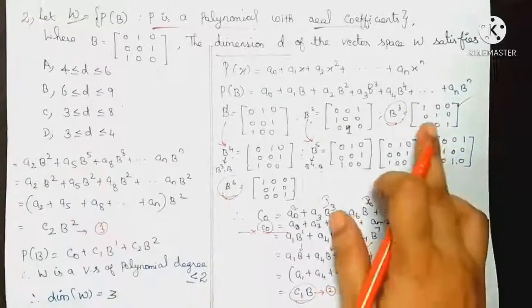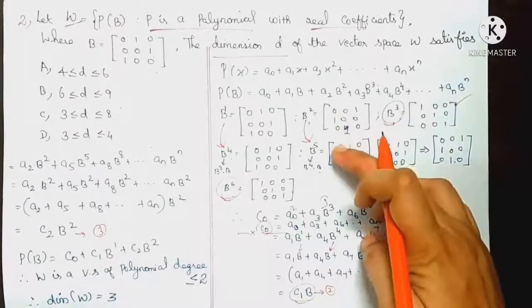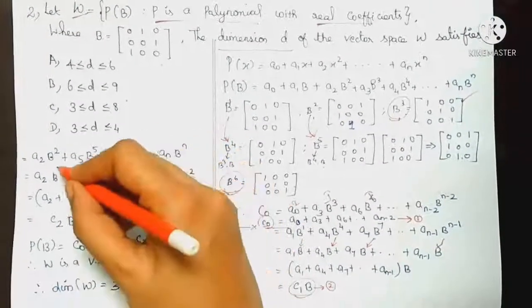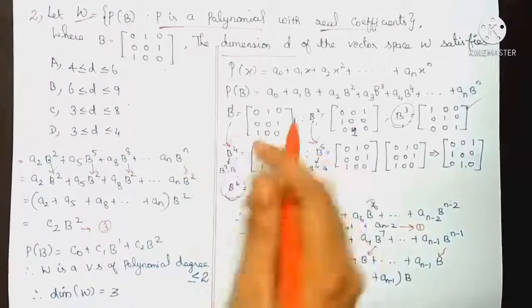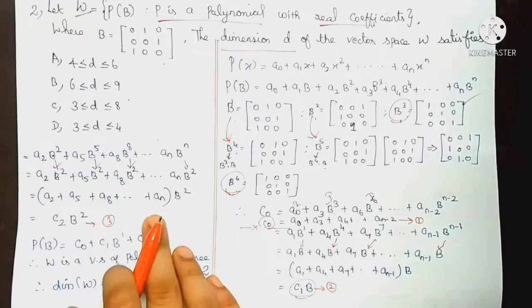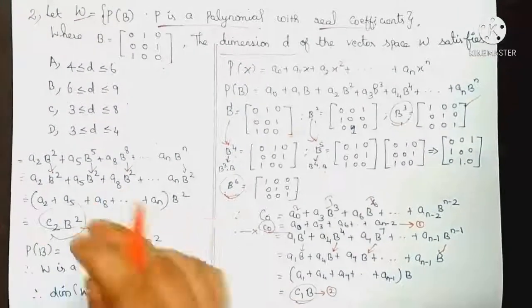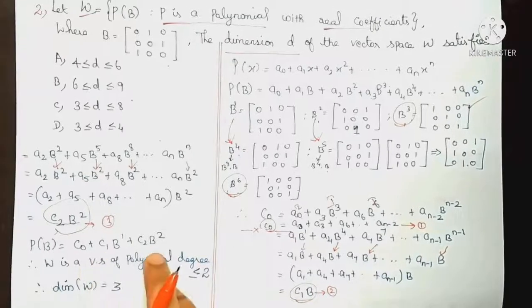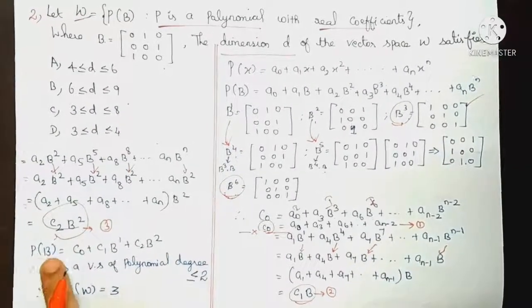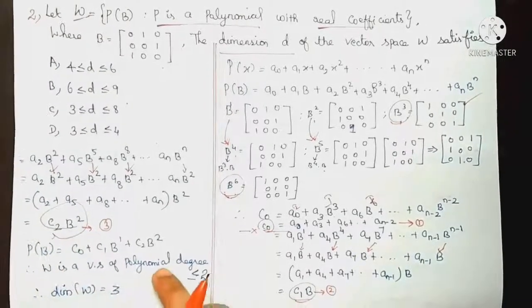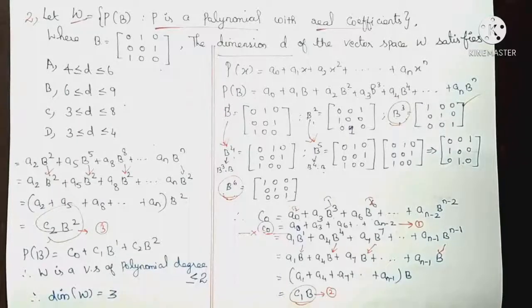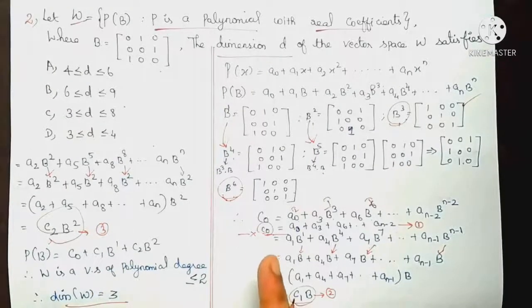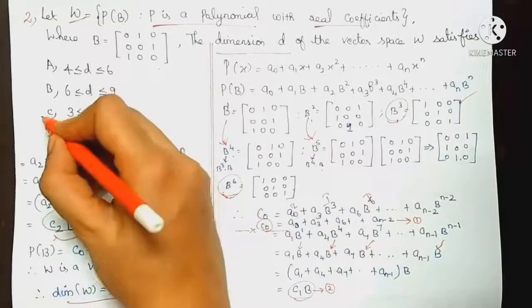B² has a different value from B. B² is the same as B⁵, B⁸, and so on — B to powers of form 3k+2. So the remaining coefficients group into C0, C1, C2. Total P of B equals C0 plus C1·B plus C2·B². This is a polynomial with real coefficients, so W is a vector space of degree less than or equal to 2. Therefore, dimension equals 3. So option C and D — AB is no.